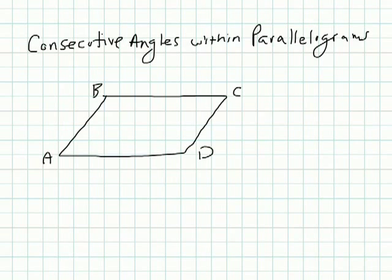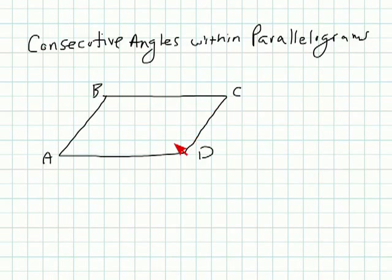The next theorem states consecutive angles within parallelograms are supplementary. Consecutive angles are two angles that share a side — angle B and angle C both share BC, or angle C and angle D are consecutive because they both share side CD. Another way to think of consecutive is in order: A and B are consecutive, B and C are consecutive, C and D, or D and A.